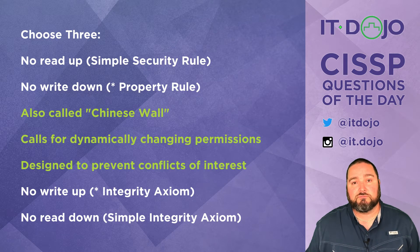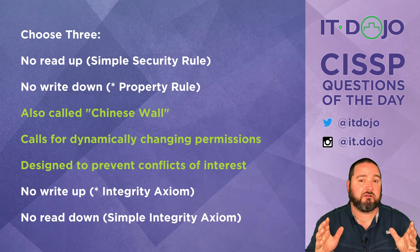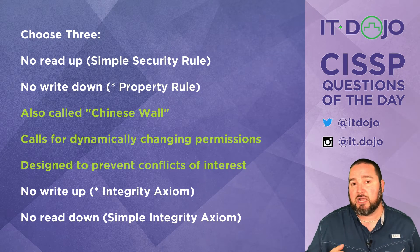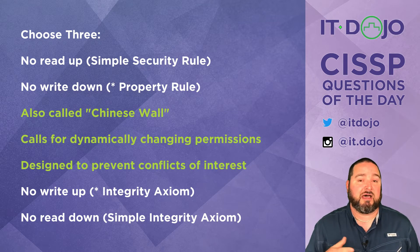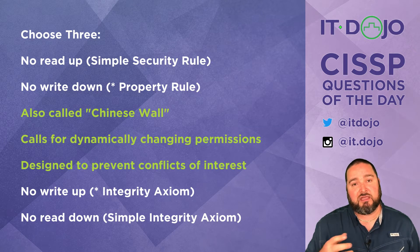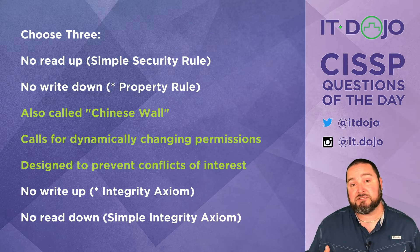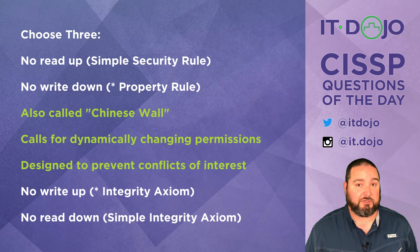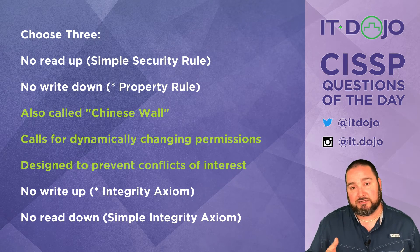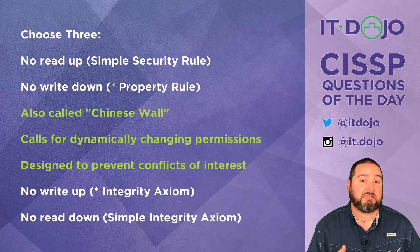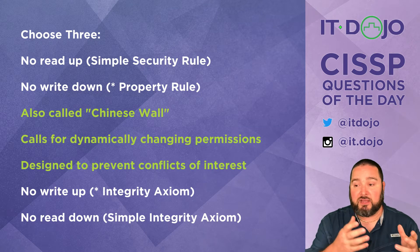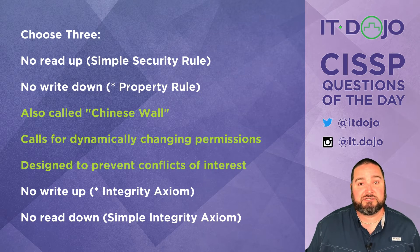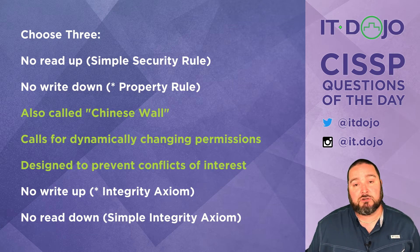Our focus is on the Chinese Wall. The Chinese Wall is very much typically discussed in the context of companies that perform financial consulting services — like a brokerage house — who potentially have access to a lot of what would be categorized as insider information for a variety of different companies. Because workers deal with information from many companies, there's a capacity for conflicts of interest when access to information from Company A could impact decisions made with Company B.